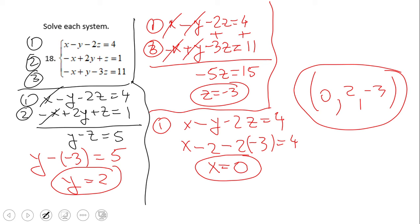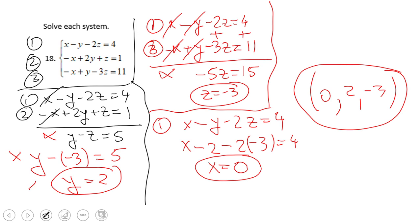This is another nice system of equations where things work out very nicely. Adding equations one and two, I end up with y minus z equals five. Then adding equations one and three, I get negative 5z equals 15, which gives z equals negative three right away. Plugging back in gives y equals two. Now with y and z known, I pick equation one, plug in, and get x equals zero.